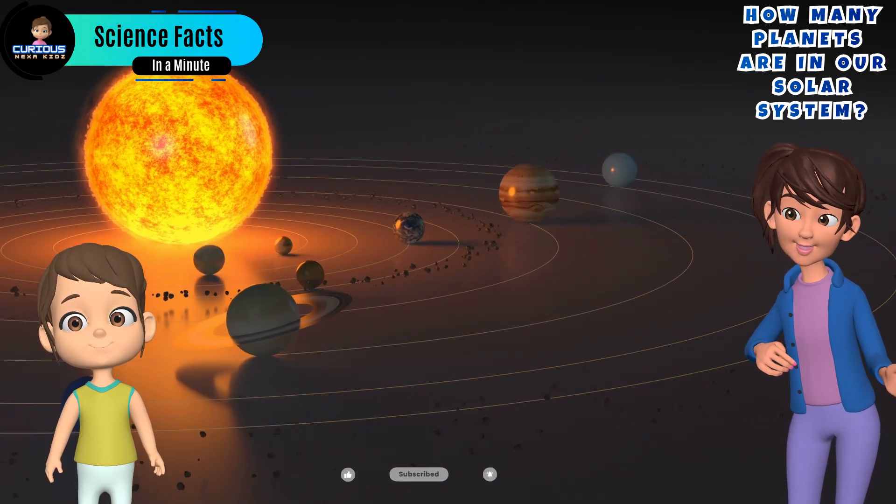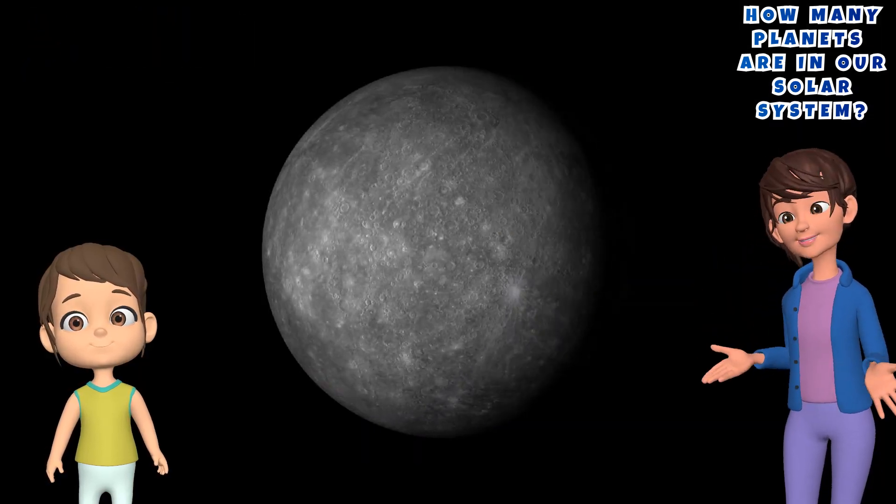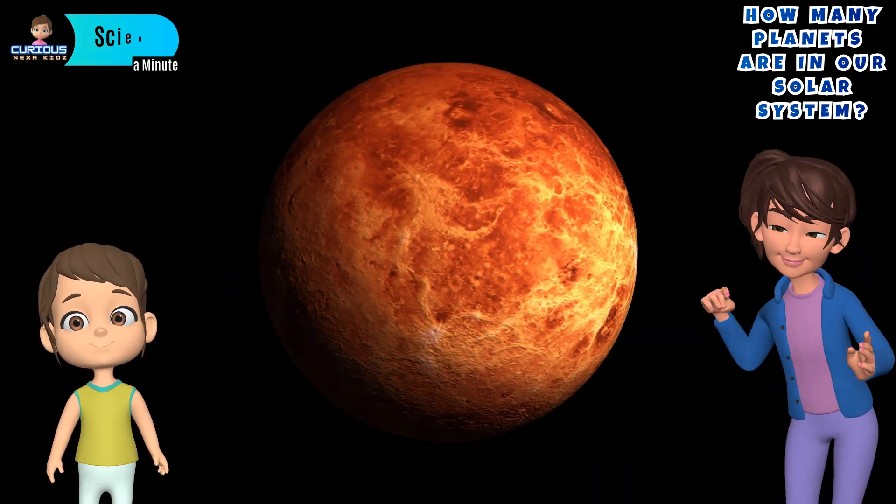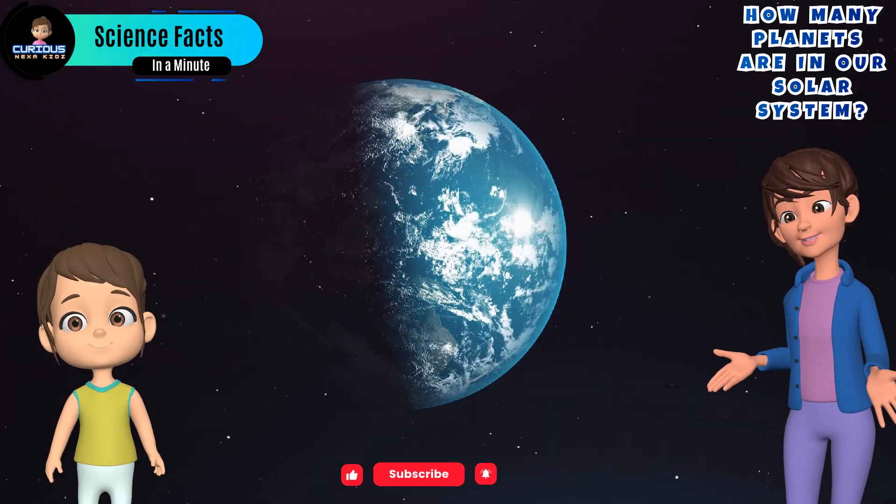The planets, in order from the sun, are Mercury, the smallest, Venus, the hottest, Earth, our home, and Mars, the red planet.